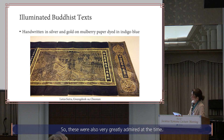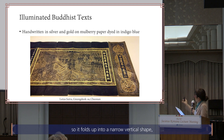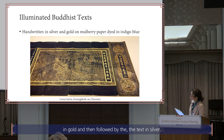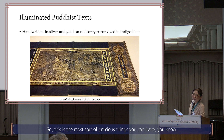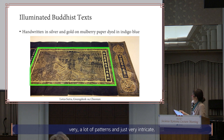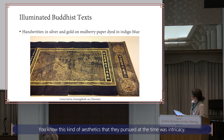There are different types of these illuminated texts — a scroll type and an accordion book style that folds up into a narrow vertical shape. There is a title page, then an illustration in gold, followed by the text in silver. These are the most precious things you can have, and the painting is very detailed — a lot of patterns and just very intricate. The kind of aesthetics they pursued at the time was intricacy.